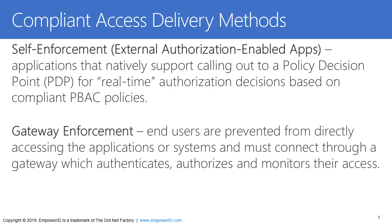The first method is called self-enforcement or external authorization. This is for applications that support calling out to a policy decision point or a centralized authorization service to ask: can this user do what they're trying to do, or what can this user do in this application? This is a great approach because you have one central spot where you model what a person can do based upon all the available organizational data in the identity warehouse — their role, what HR says, their status.